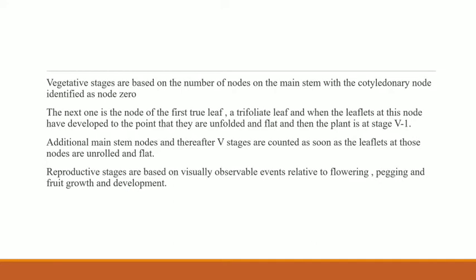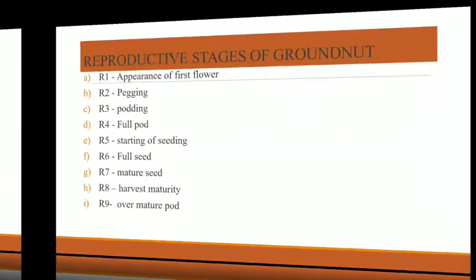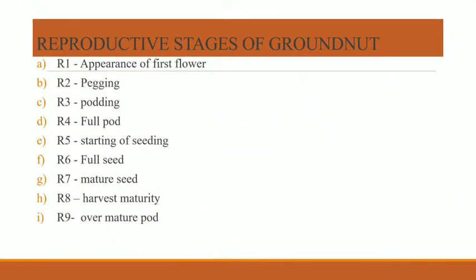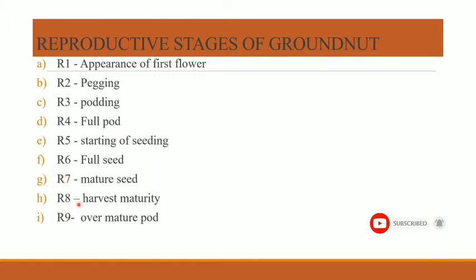The reproductive stages of the groundnut are: R1 beginning bloom, R2 pegging, R3 podding, R4 full pod, R5 beginning seed, R6 full seed, R7 mature seed, R8 harvest maturity, and R9 over-mature pod.